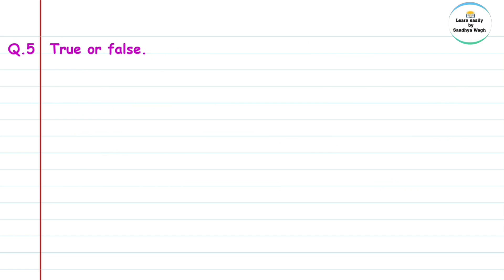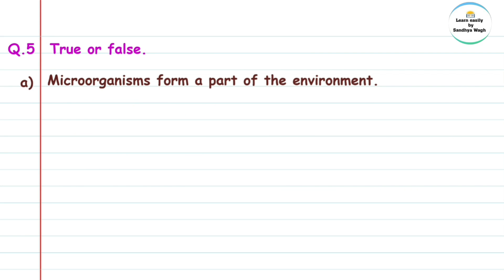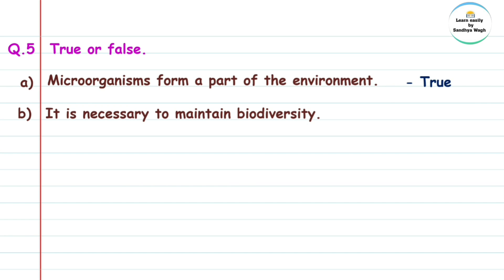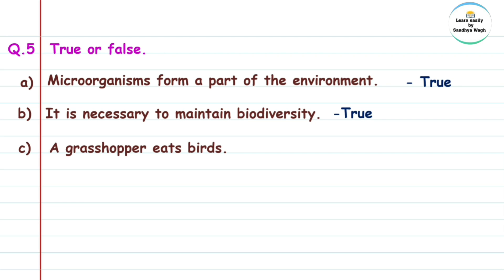Question 5: True or False. (a) Microorganisms form a part of the environment — True. (b) It is necessary to maintain biodiversity — True. (c) A grasshopper eats birds — here the sentence says a grasshopper eats birds, but actually birds eat grasshoppers, so this is False.